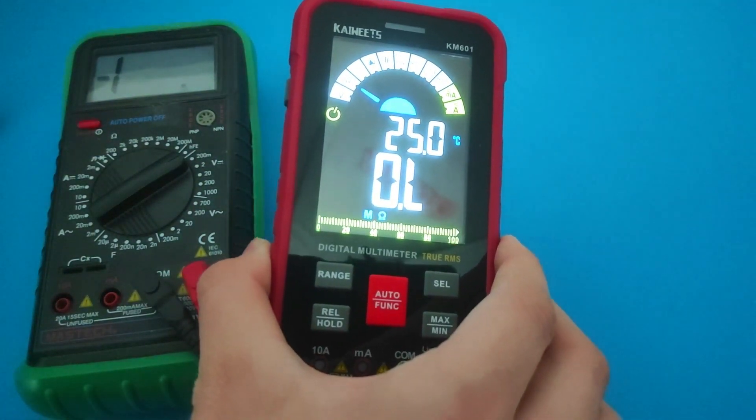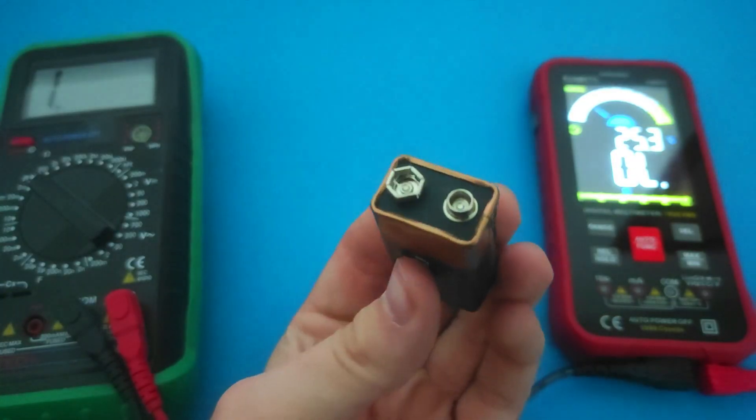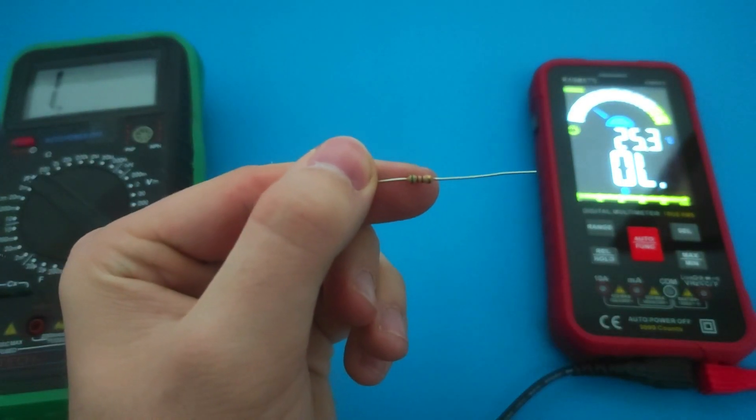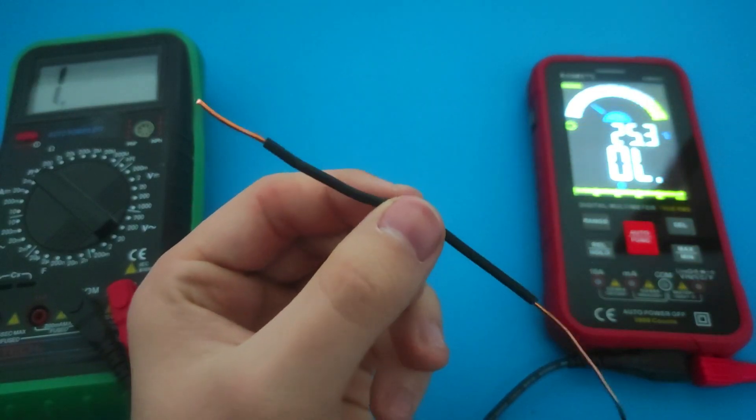Now you will see how OL appears in different tests. We will demonstrate how testing voltage, resistance, and continuity can cause an overload.